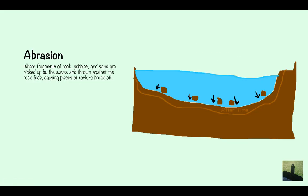Abrasion. This is different to attrition - usually people get these two mixed up. Remember attrition they're heading at each other whereas abrasion is where they're heading at the wall or at different pieces of rock. This is where fragments of rock, pebble and sand are picked up by the waves and thrown against the rock face causing pieces of rock to break off.